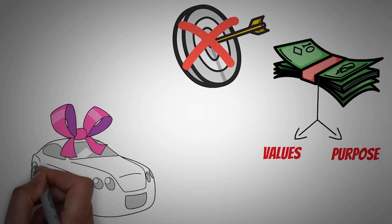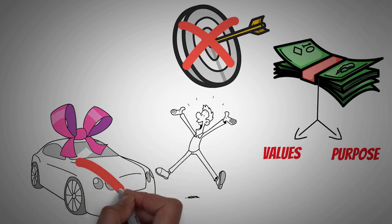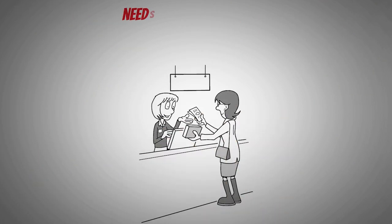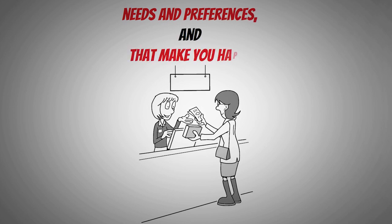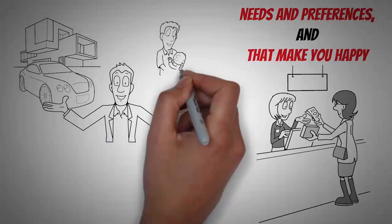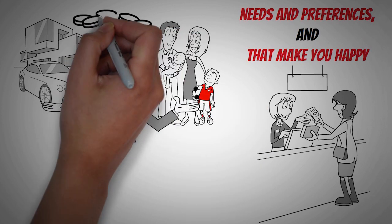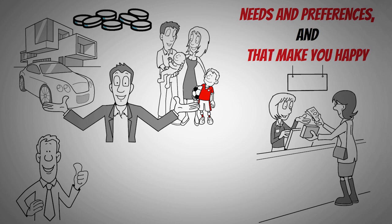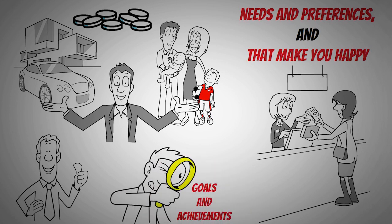For example, you don't buy a fancy car just because your neighbor has one, or a designer bag just because your favorite celebrity has one. You buy things that suit your needs and preferences and that make you happy. You also don't get jealous or bitter when you see someone who has more money than you, or pity or judge someone who has less money than you. You respect and appreciate everyone regardless of their financial status, and you focus on your own goals and achievements.